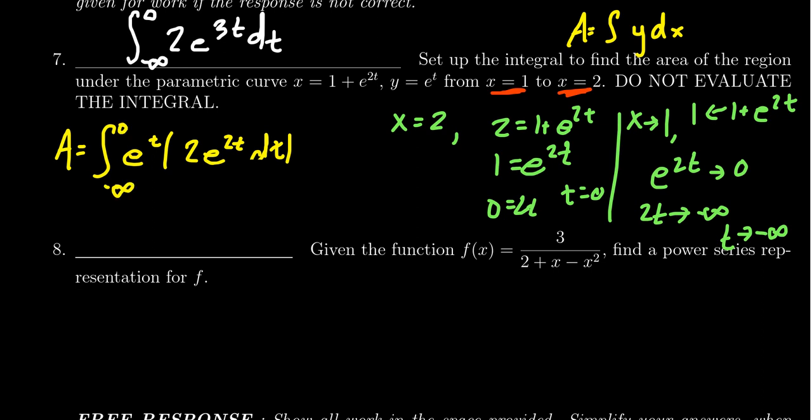For grading, I'd want to see that you converted from x values to t values. The bounds need to be negative infinity to 0. You need the y coordinate e^t, the derivative of x which is 2e^(2t), and the differential dt. Omitting the dt would cost a point. This shows how to set up the integral to find the area under this parametric curve.